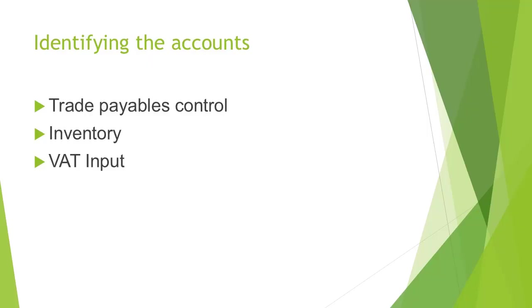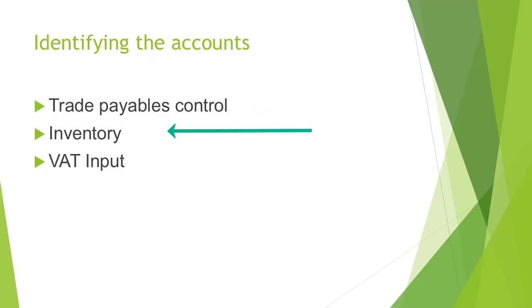The first step is to identify the affected accounts. The first affected account is Trade Payables Control, since the inventory previously purchased on credit is now returned and therefore the supplier, or in other words the creditor, will provide the business with a refund that will reduce the amount the business owes to them. The second affected account is inventory.